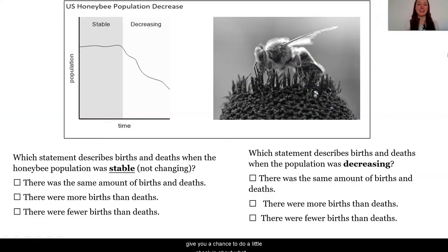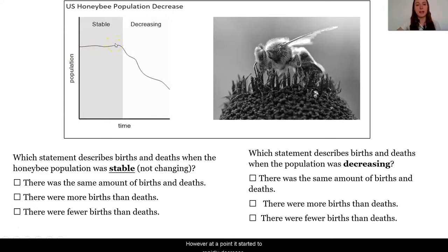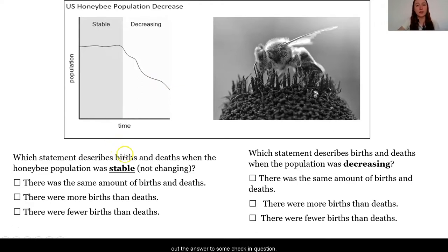Before we get started with our lesson today, I wanted to give you a chance to do a little check-in about what we've learned so far. Here we have a graph of the U.S. honeybee population. As we can see, the population of honeybees in the United States was stable for a period of time. However, at a point it started to rapidly decrease. What does this mean and how did this occur? Using what we've learned so far, let's see if we can figure out the answers to some check-in questions.